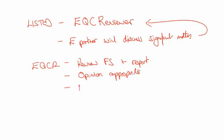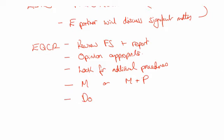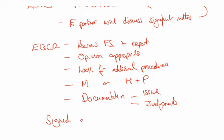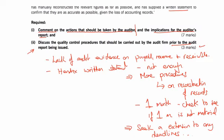The reviewer will also look for additional procedures that we might have done or should do. Particularly here, they'll be thinking: is it material, or is it material and pervasive? Also, good quality control is all about documentation — particularly documentation about the key issue and about the judgments made when coming to our opinion, whether it's material and pervasive. The audit is signed after the Engagement Quality Control Review. That last bit was really only three marks and very much knowledge-based.